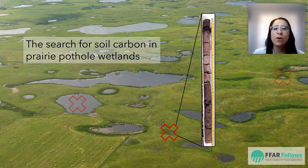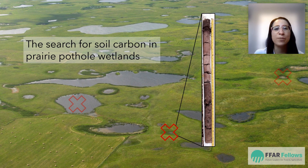These aren't the potholes that you accidentally hit on the road when you're driving to work. But like a pothole in the road, prairie pothole wetlands hold water on the landscape, and this moisture helps accumulate soil carbon over time.